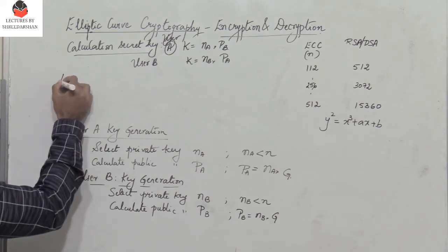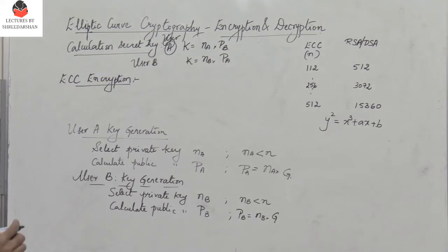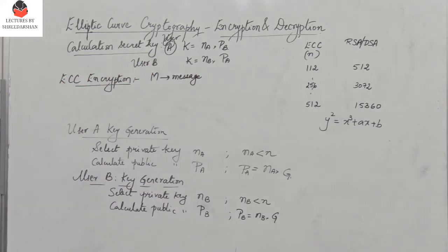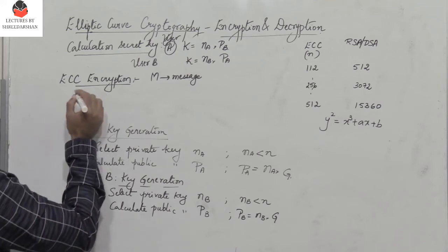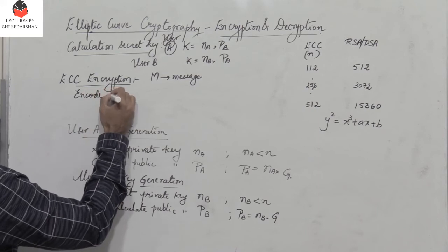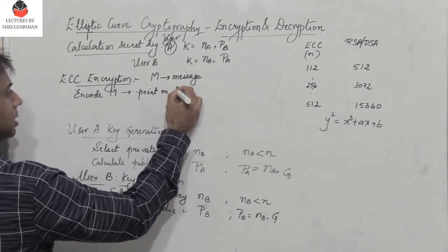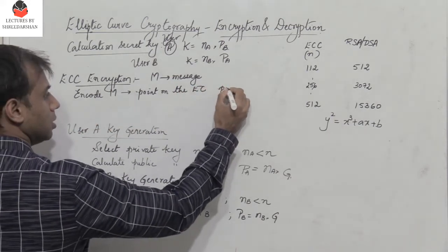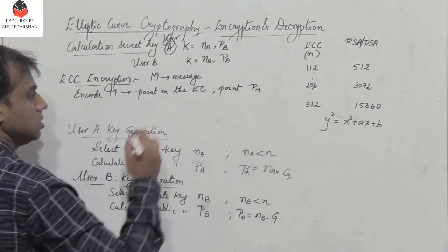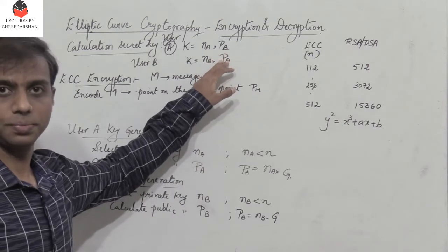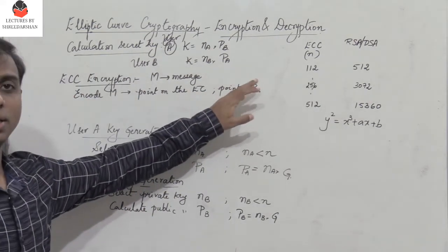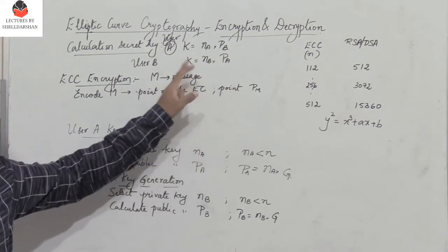Now let the message be M. To encrypt the message M, it is first encoded to obtain a point on the elliptic curve. Let that point be called P_M, where P_M represents the message M. If we decode the point P_M we should get back the message M.